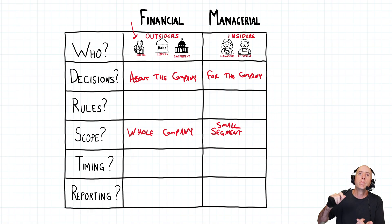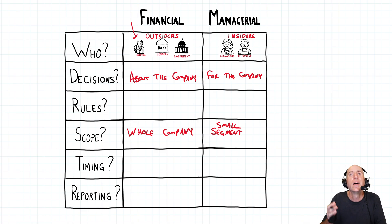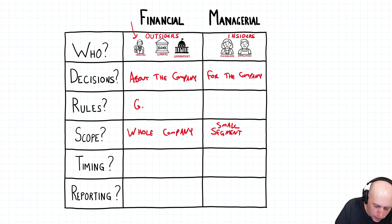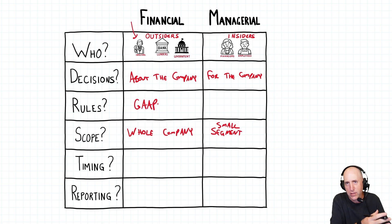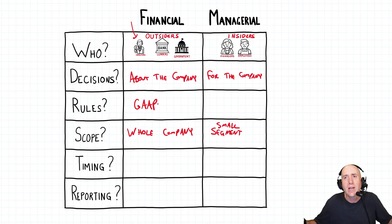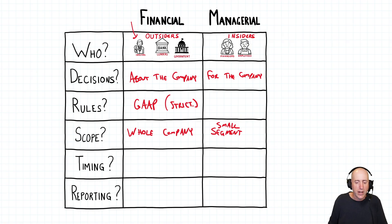Because the outsiders — bankers, investors, government — are not part of the company, standard setters have said they need to be protected. And how do they get protected? We put rules on how you make your financial reports. Your financial reports have to be consistent from one company to another. Apple can't report one way and have Google reporting a totally different way. The companies have to follow generally accepted accounting principles — GAAP — whether that be US GAAP, Canadian GAAP, IFRS, or some other rule. And if they're going to be on stock markets, they have to follow SEC rules or stock exchange rules. The rules are fairly strict around financial accounting.